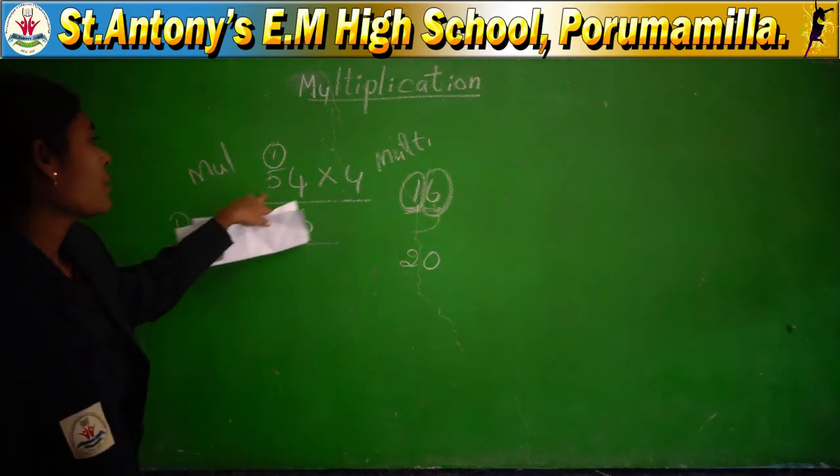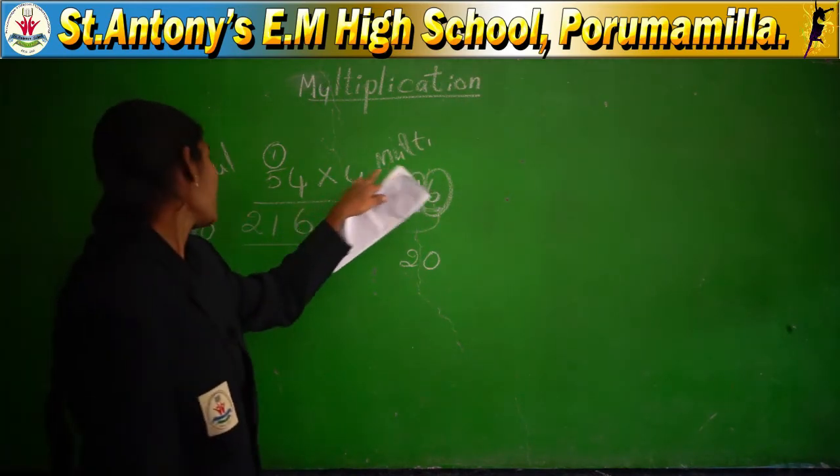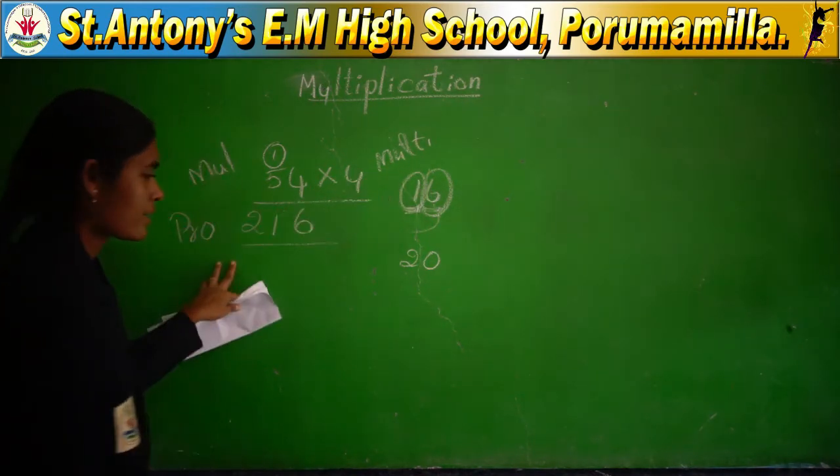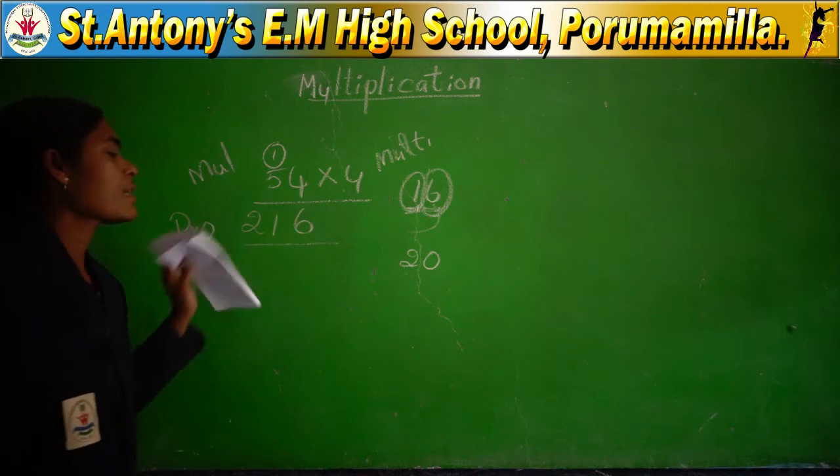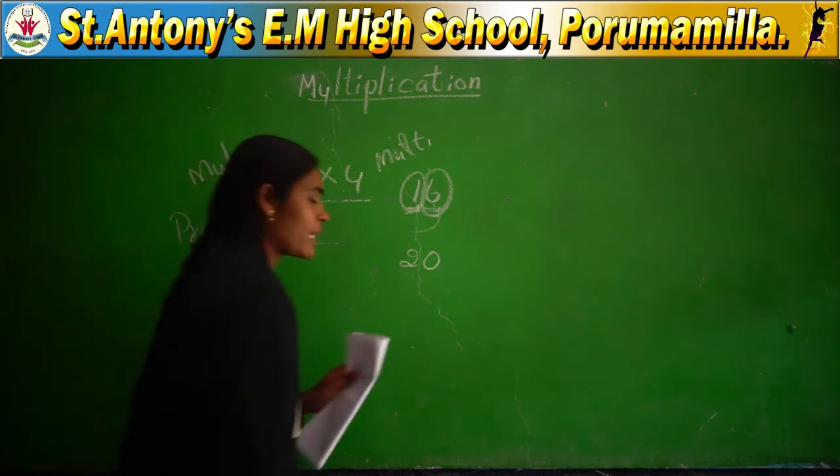Multiplicand, multiplier, product — this is single digit multiplication.